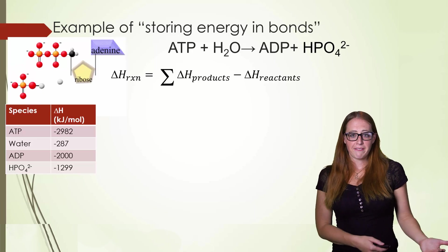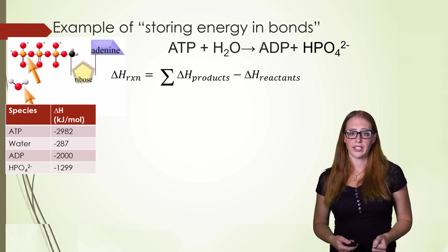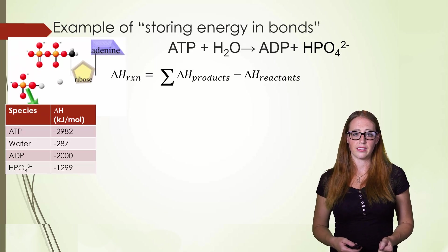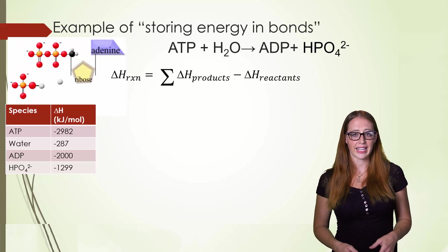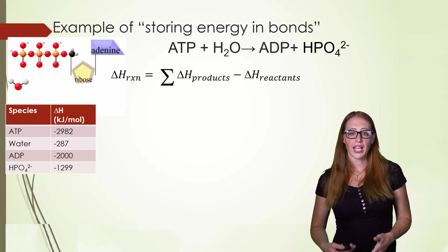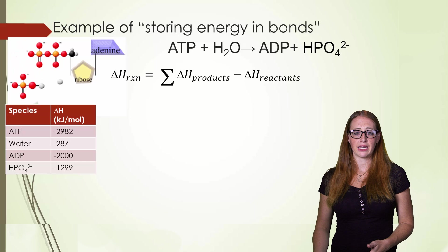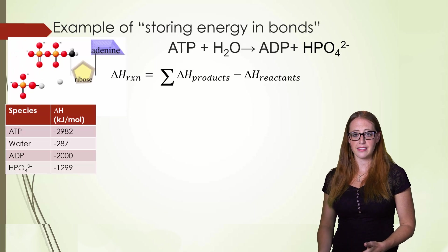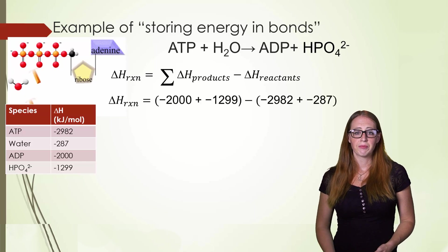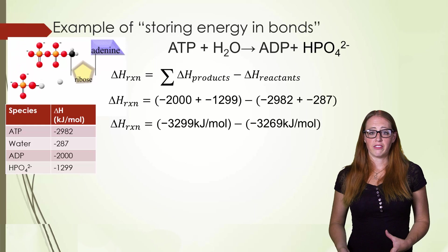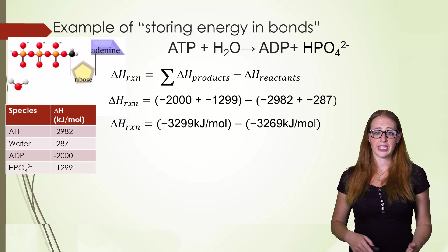If we have these values we can fill in. We can fill in our negative 2,000 and our negative 1,299 for our products. And we can then go ahead and fill in our ATP and our water for our reactants. Subtract that away. And we get our final value which is a negative 30 kilojoules per mole.